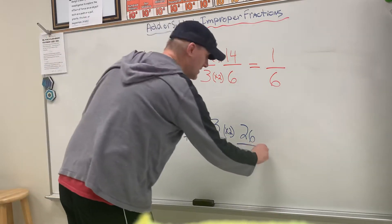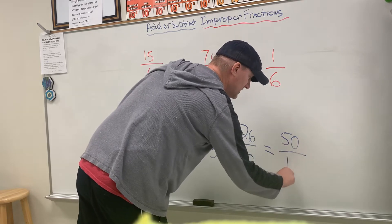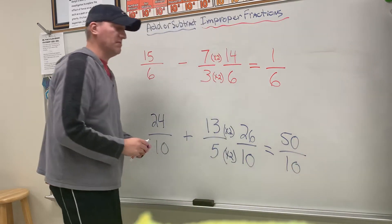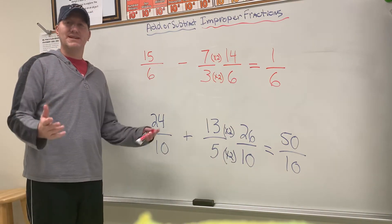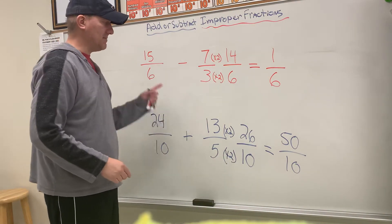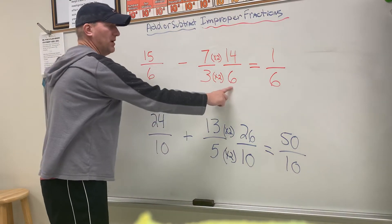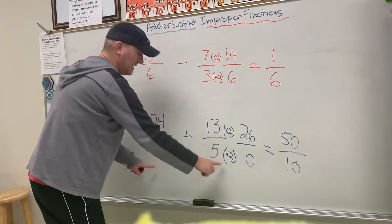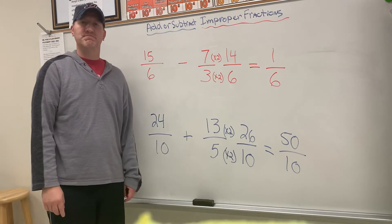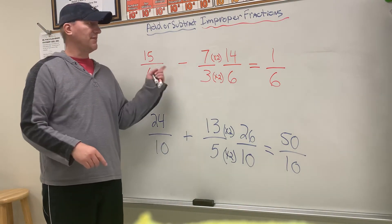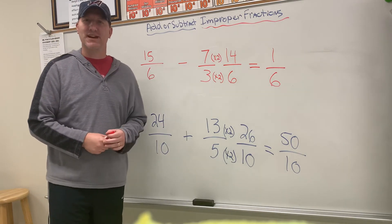That would be a total of 50/10 as my improper fraction. So again, the key is finding a common denominator. Once you find that common denominator and they're both the same, then you can go ahead and subtract them. All right guys, have fun doing your problems on adding and subtracting improper fractions!